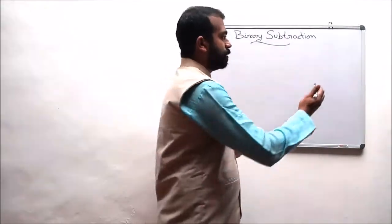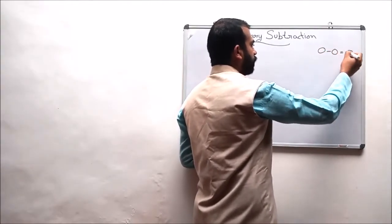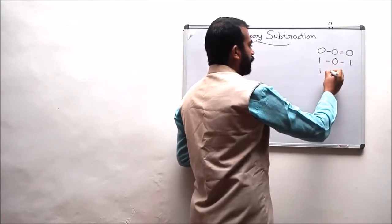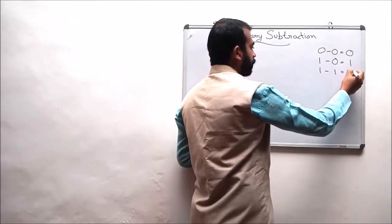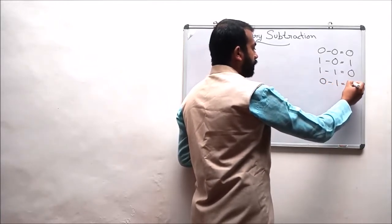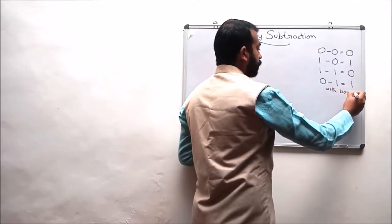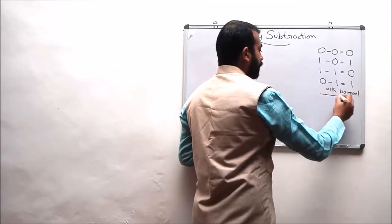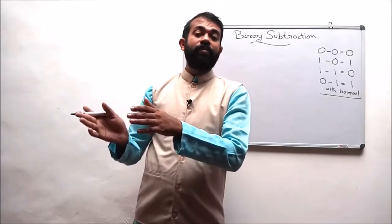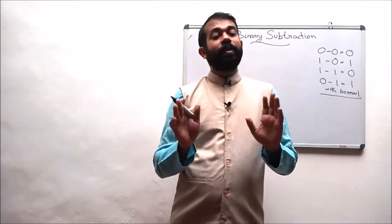The different rules for binary subtraction are: 0 minus 0 results in 0; 1 minus 0 results in 1; 1 minus 1 results in 0; and finally 0 minus 1 results in 1 with a borrow of 1. So 0 can be subtracted from 1 if and only if we borrow 1 from the neighbouring digit. These are the four different rules for binary subtraction.